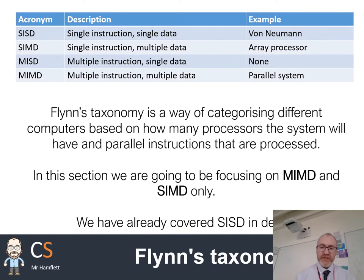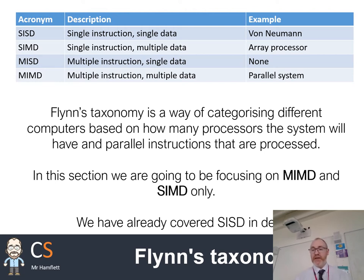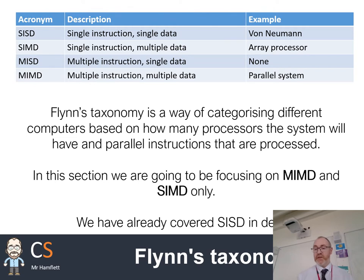Although this isn't necessary for the A-level, it's a useful way of categorizing different types of parallel architecture — it's known as Flynn's taxonomy. The one we are most used to, the Von Neumann architecture, is known as Single Instruction, Single Data (SISD). A single instruction runs on the processor and works on only a single piece of data — for example, loading or saving a piece of data.